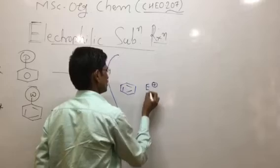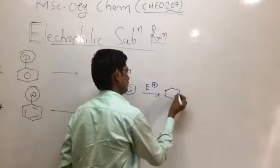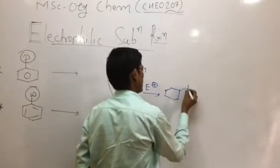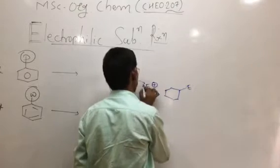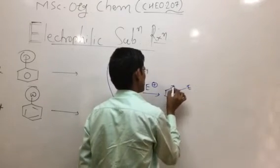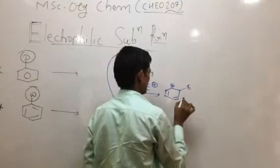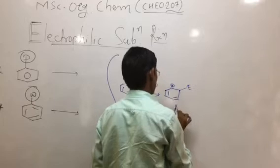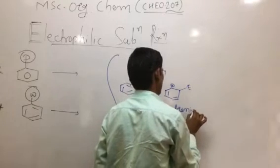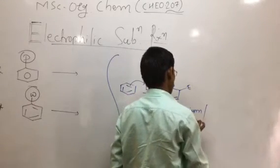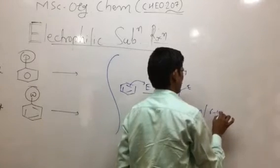We have the arenium ion, also called the sigma complex. It involves pi electron shifting, where the positive charge is delocalized. It acts as an arenium ion or sigma complex.